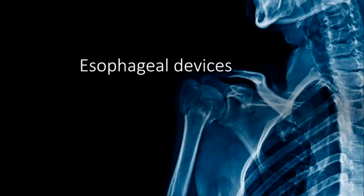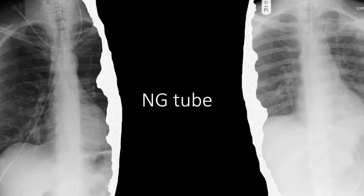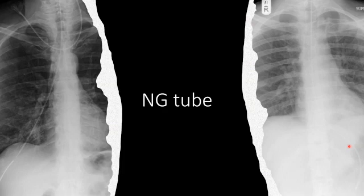In the next few images we're going to look at the placement of esophageal devices. This first image shows a nasogastric tube in satisfactory position within the stomach. Nasogastric tubes typically have a side hole where there is a break on the radiopaque marker, so you can clearly see where it is. That side hole needs to be below the diaphragm, and ideally you want the tip to be at least 10 centimeters below the diaphragm.